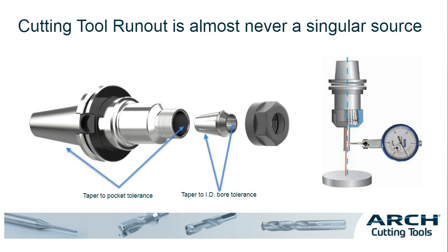Cutting tool runout is almost never from a singular source. In this ER collet-style holder example, we can clearly see the stack-up of tolerances before we even introduce the cutting tool: the tapered pocket tolerance, then the pocket-to-collet variation, and the collet tapered-to-ID bore tolerance. Add the possibility of the holder being worn, damaged, or showing micro fractures in the ID taper. Regularly cleaning and inspecting this type of holder is critical. I've personally seen chip indentations in the ID taper wall where the holder wasn't properly cleaned, shifting the collet off-center and causing excessive runout.